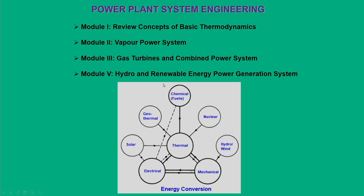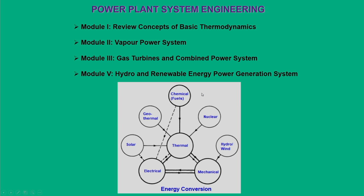While looking at the syllabus, we will try to introduce many concepts. For learners, I need to emphasize that some concepts are already covered in basic UG courses such as applied thermodynamics. The entire course structure is divided into four modules: Module 1 focuses on basic reviews of thermodynamics; Module 2 on vapor power systems; Module 3 on gas turbines and combined power systems; and Module 4 on hydro and renewable energy-based power generation systems.